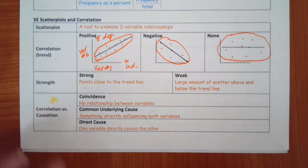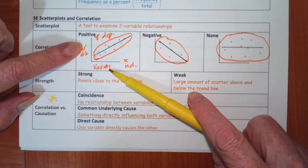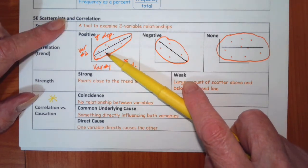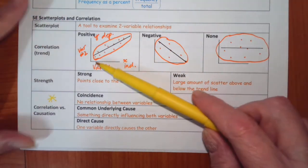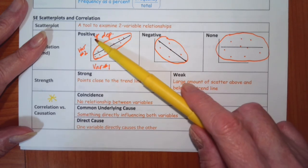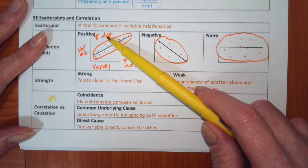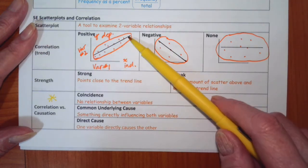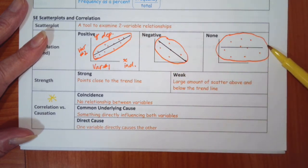The last part of five is scatter plots and correlation. A scatter plot is just a tool to examine two variable relationships. You've got one variable on this axis, one variable on this axis, and each dot represents a data point, and that data point has this characteristic and this characteristic. These are numbers. They are not categories. This is also called the x-axis, the y-axis, or the independent and dependent variables. So if it's going up from left to right, then it's positive. If it's going down from left to right, it's negative. And if it's just all over the place, it's none.